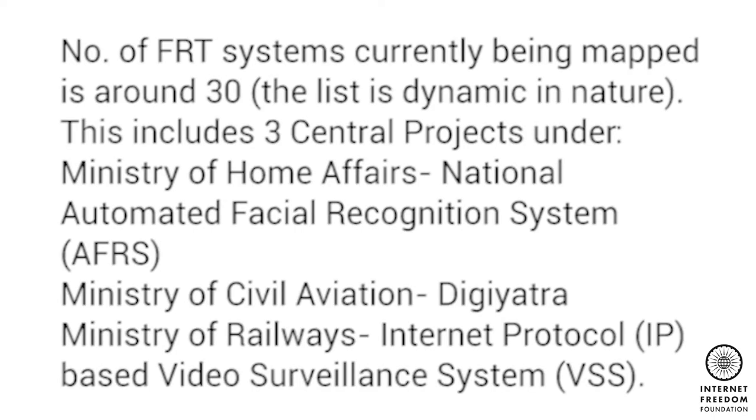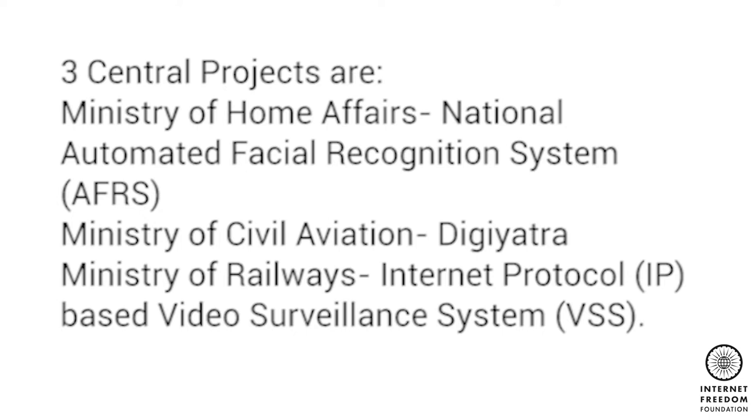Currently, the number of projects being mapped through Project Panoptic's tracker are around 30. The list, however, is dynamic. This includes three central projects and around 27 state-level projects. The three central projects are the National Automated Facial Recognition System being developed by the Ministry of Home Affairs, the DigiYatra project being developed by the Ministry of Civil Aviation, and the internet protocol-based video surveillance system being developed by the Ministry of Railways. When we talk about state-level projects, most of these are systems being used by state police departments — police departments of states like Delhi, Maharashtra, Punjab, Uttar Pradesh, Uttarakhand, etc., all have separate facial recognition systems in place or in stages of introduction.